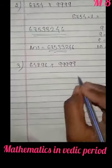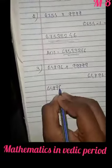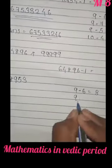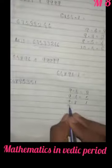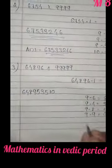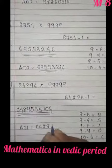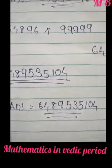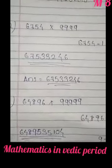64896 into 999999. First you write 64895. Then 9 minus 6 is 3, then 9 minus 4 is 5, then 9 minus 8 is 1, then 9 minus 9 is 0, lastly 10 minus 6 is 4. The answer becomes 6489535104.